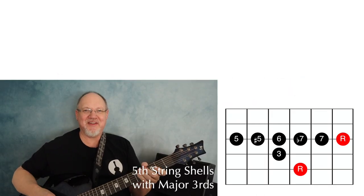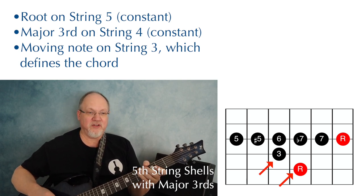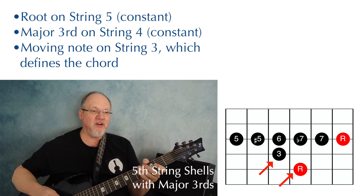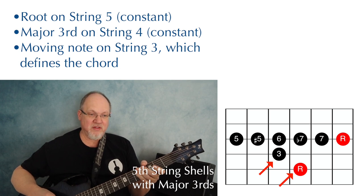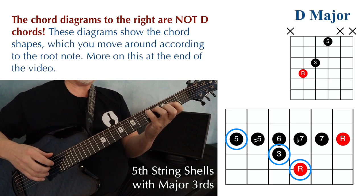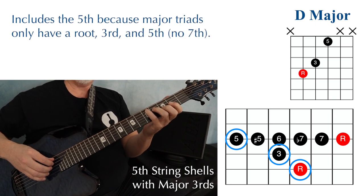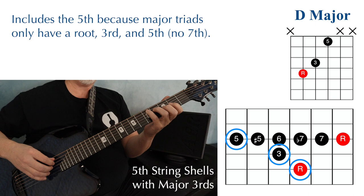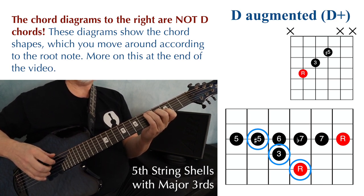Now we're onto the good stuff. This series of chords has a root on the fifth string, a third on the fourth string — a major third — and then some other note on the third string. The root and the third are constant; it's the other note on the third string that completes the chord. Playing root-three-five gives a D major chord, with the root on the D string at fret five. This chord includes the fifth because major triads have roots, thirds, and fifths — not sevenths. Changing that third string note to sharp five gives an augmented triad.